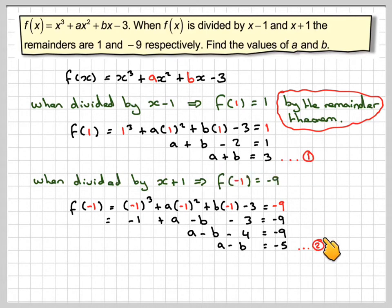We can solve this simply by adding, solving simultaneous equations. Equation 1 plus equation 2 will give me a plus a, which is 2a, and b minus b, which will give me nothing. And 3 minus 5 will give me minus 2, which means that a equals minus 1.